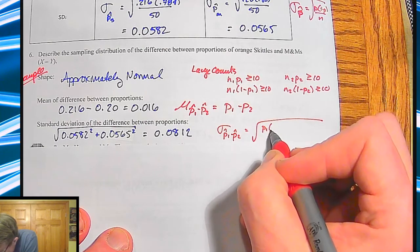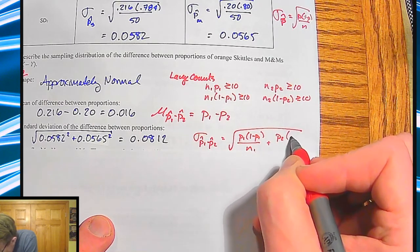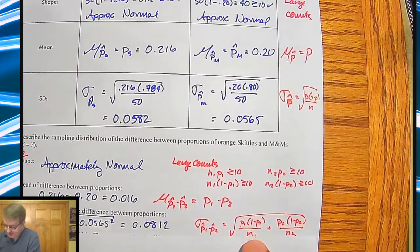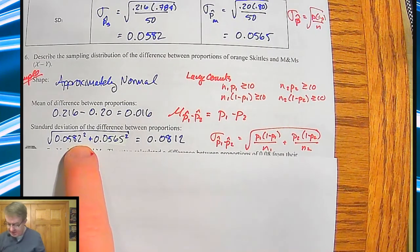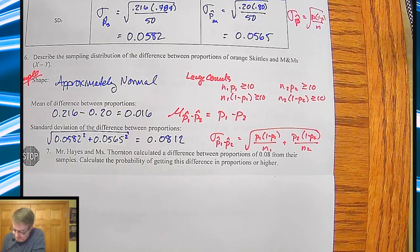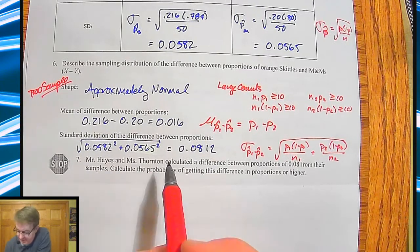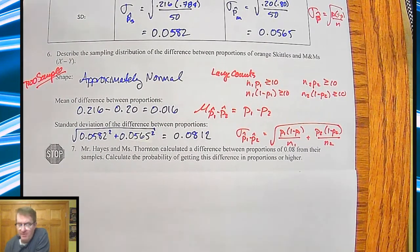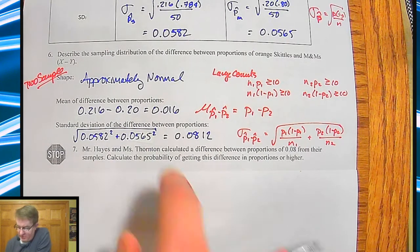The formula looks more complicated than it really is. You're squaring each individual standard deviation term, adding them together, and then taking the square root — just like we did for transforming standard deviations back in Chapter 6. We stopped here to check: if you get the standard deviation wrong, your z-score and the probability question below will also be wrong.